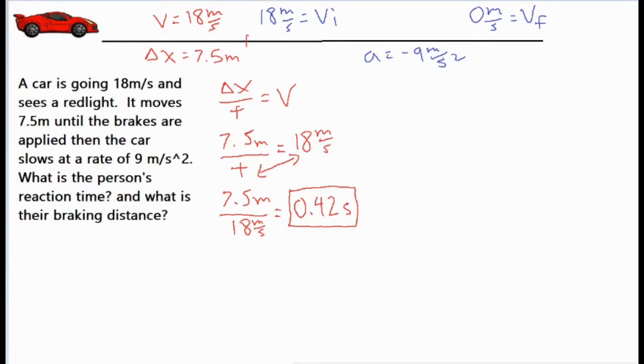I like to use this cross multiplying step, which is the same thing as multiplying both sides by t. In that case, the t would pop over on this side and you would divide both sides by 18. But either way you would still end up doing 7.5 divided by 18 to get your reaction time of 0.42 seconds.